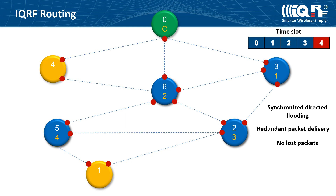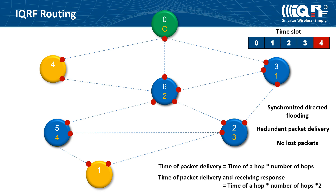A message propagation through the whole network takes some time. You can calculate this by multiplying the number of hops by the time slot length. The number of hops and time slot length are reported by the coordinator in DPA confirmation. You can calculate the time of packet delivery and receiving a response by multiplying the previous number by 2, because the message needs to go through the network back to the coordinator gradually hop by hop.